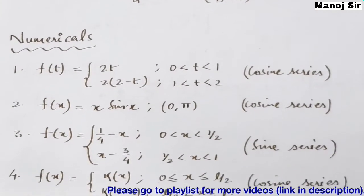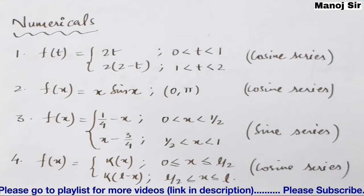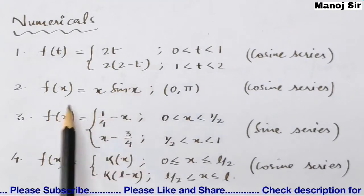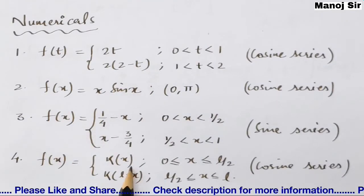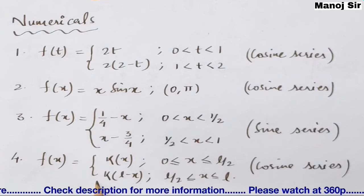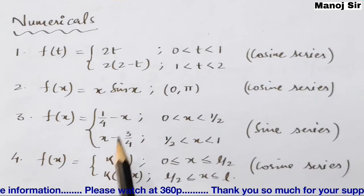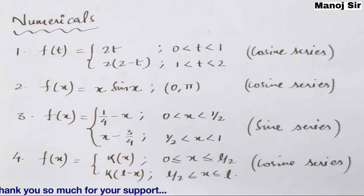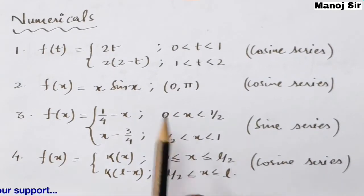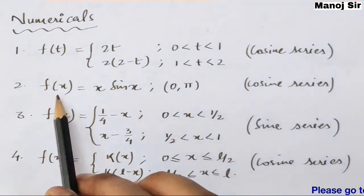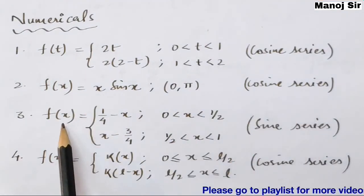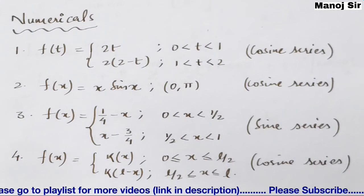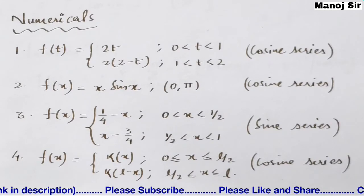This is video number 17. The upcoming videos — 18, 19, 20, and 21 — will cover the most important problems from this topic. Of those four, the last question is the most important. The problems are categorized as: video 18 is a cosine series problem, video 19 is a cosine series problem, video 20 is a sine series problem, and video 21 is a cosine series problem. Let us start solving them one by one.